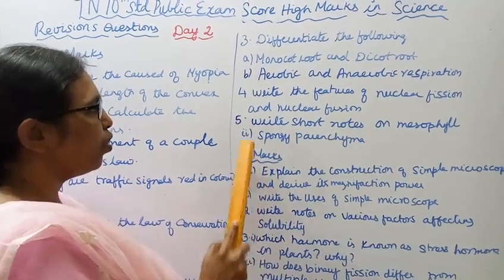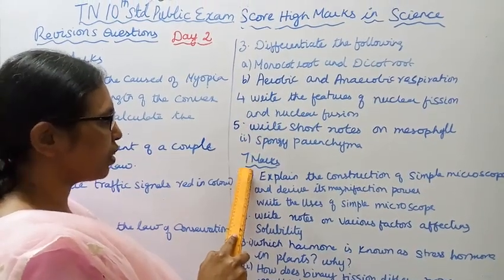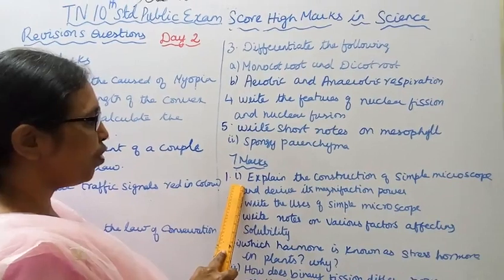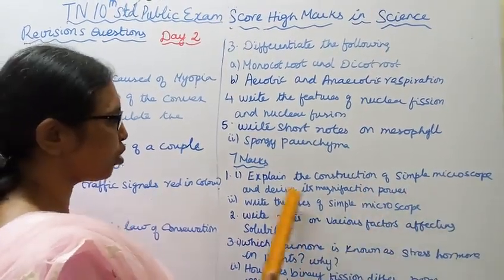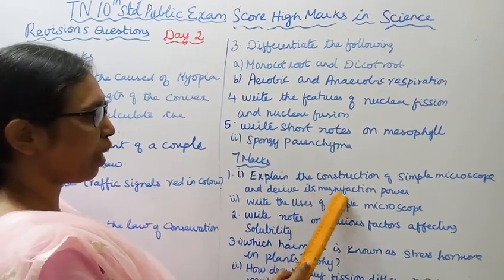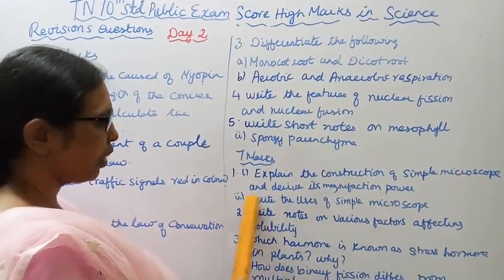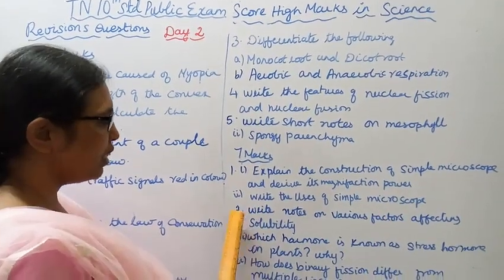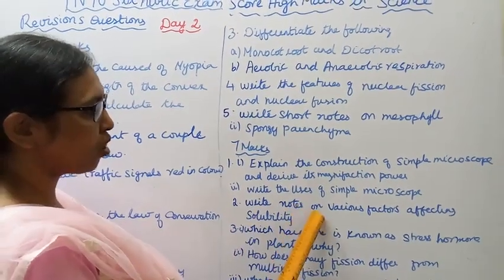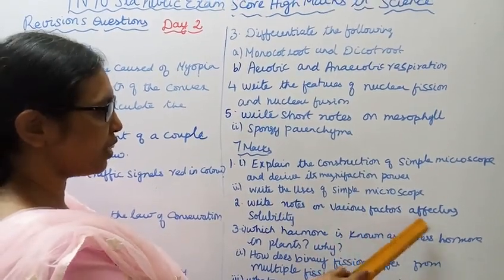Now for seven-mark questions. First question, first subdivision: Explain the construction of simple microscope and derive its magnification power. Second subdivision: Write the uses of simple microscope.